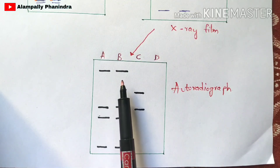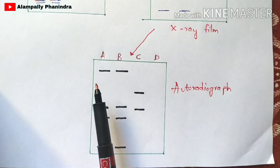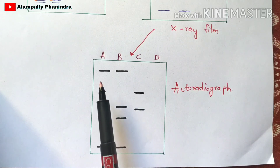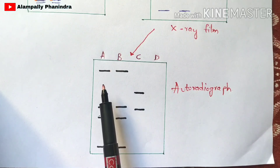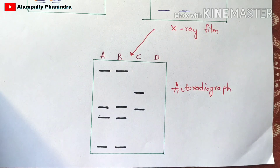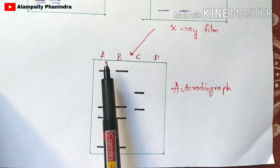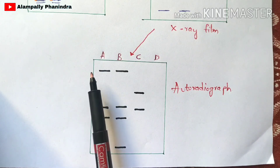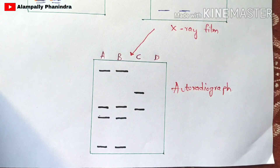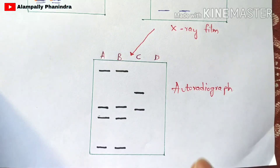In the autoradiograph result, the sequences present in A and B wells are related to each other and similar. The strands in C are nearly similar to those of plasmid A, but in the case of D, there are no strands similar to A, B, or C. This is the final result obtained by doing the Southern blotting technique — you can detect the specific sequences related to plasmid A because you added probes related to plasmid A.